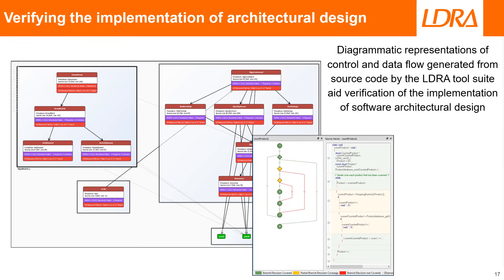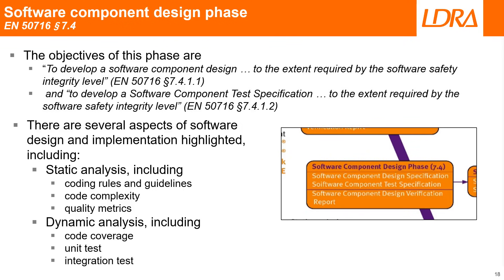As shown here, the tools derive the relationship between some or all of the code components and represent that relationship graphically such that it can then be compared with the intended design. The software component design phase lays down the processes and techniques that are to be followed in subsequent phases, making it the most verbose in the standard, but not necessarily the most time-consuming in implementation.